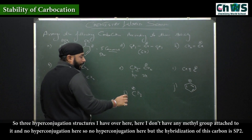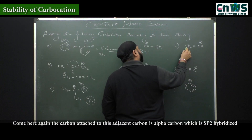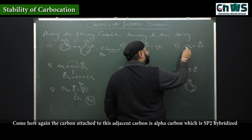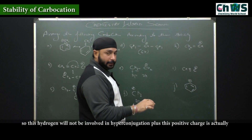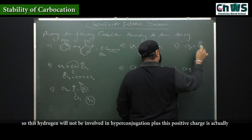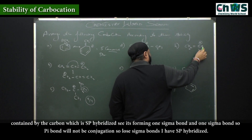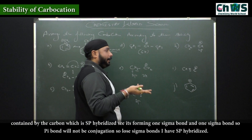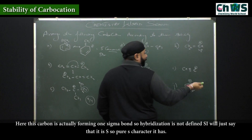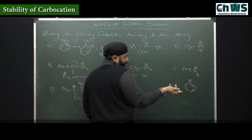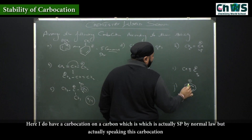The hybridization of this carbon is sp2. The carbon adjacent to this carbocation is the alpha carbon, but this alpha carbon is sp2 hybridized, so this hydrogen will not be involved in hyperconjugation. This positive charge is contained by a carbon which is sp hybridized — it's forming two sigma bonds, so sp hybridized. This carbon is forming one sigma bond, so its hybridization is essentially pure s character.